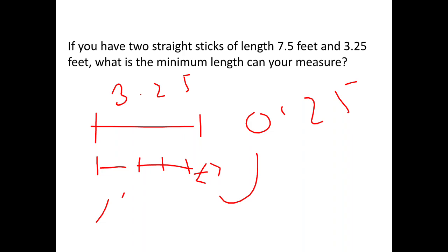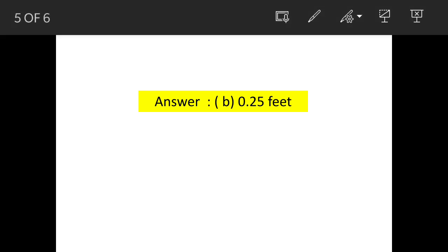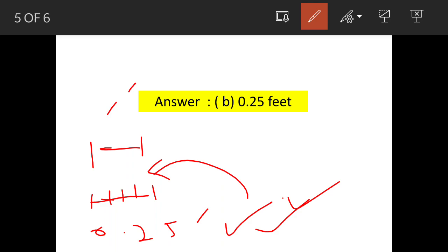But we'll examine this again. Now we have got one smaller stick which is 1 feet, and we got another stick which is 0.25 feet. If we mark this 0.25 feet four times, all the sticks will be of the same size. So 0.25 feet is the minimum possible length which can be measured using these sticks.